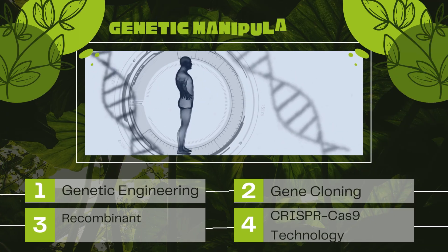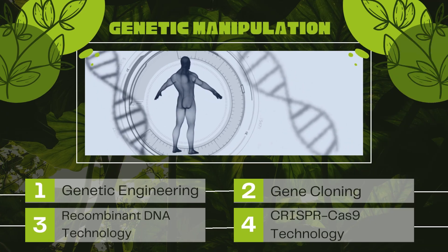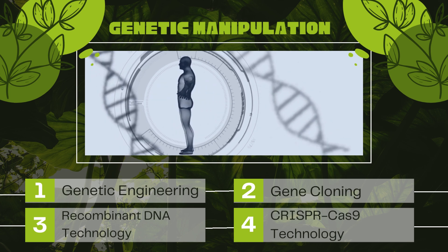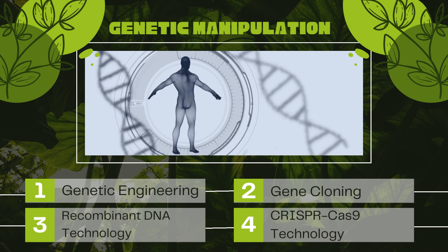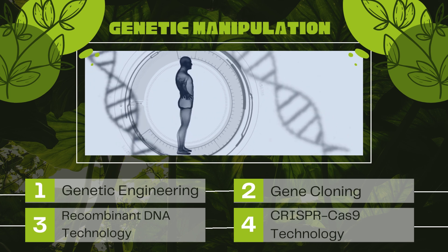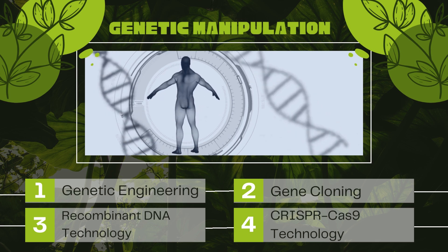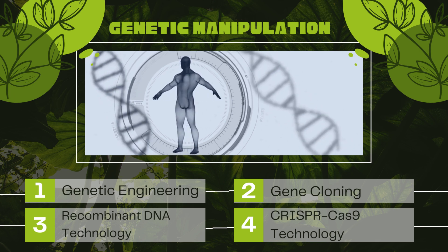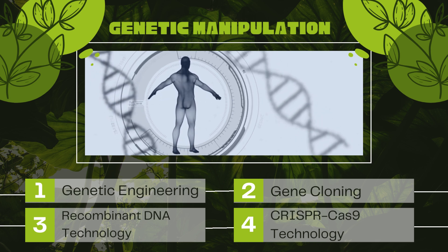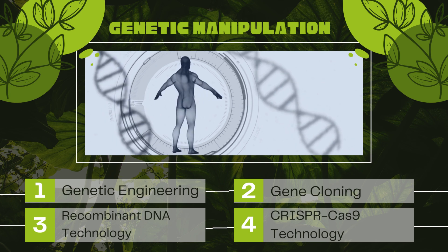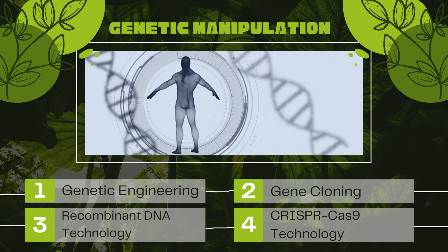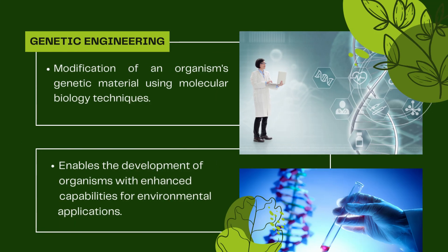Now we will discuss the four essential aspects of genetic manipulation strategies in environmental biotechnology, which are genetic engineering, gene cloning, recombinant DNA technology, and CRISPR-Cas9 technology.